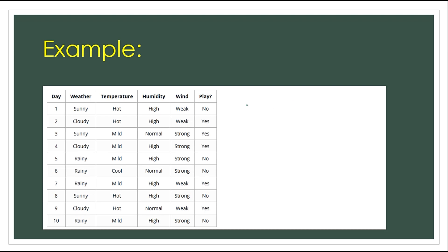Let's check an example. We will use a dataset with features: weather, temperature, humidity, and wind. On day 1, weather is sunny, temperature is hot, humidity is high, wind is weak — the player outcome is no. On another day, weather is cloudy, temperature is hot, humidity is high, wind is weak — the outcome is yes. These are the supervised outcomes.